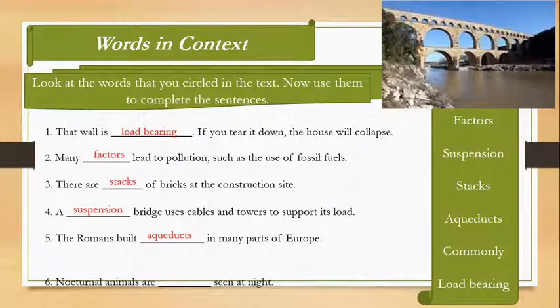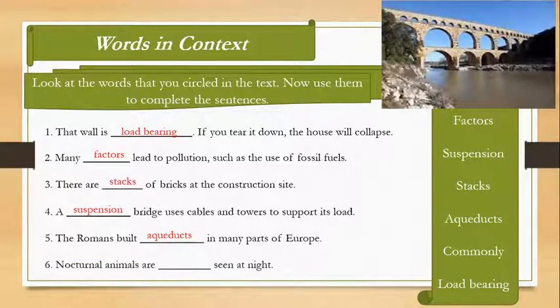The sixth one is: nocturnal animals are commonly seen at night. It is obvious what the answer is because only one is remaining, which is commonly. But what are nocturnal animals? Nocturnal animals are those animals which are active at night and which look for their prey and their food at night, which are owls and bats. These are two birds which are nocturnal animals. They always look for their food and are active at night.